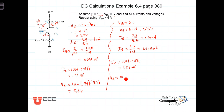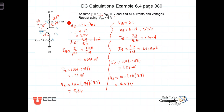V_C now equals 10 minus 1.58 milliamps times 4.7 kilohms, giving V_C equal to 2.57 volts. Now we test our assumption. V_C is 2.57 volts while V_B is 6 volts — the base-collector PN junction would be forward biased. In fact, the transistor would have become forward biased long before reaching this condition. The transistor is not in the active region; it is in the saturation region, which changes our calculations.